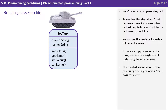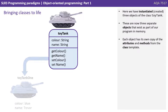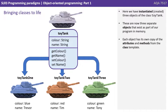Here's another example — we've got a toy tank. This class doesn't yet represent any real instance of a toy tank; it just tells us what all toy tanks need to look like. We can see that each tank needs a colour and a name. To create a copy or an instance of a class, we use a single line of code using the keyword new. This is called instantiation — the process of creating an object from a class template. We have instantiated three objects of the class toy tank. These are now three separate objects that exist as part of our program in memory, each with its own copy of the attributes and methods from the class template.